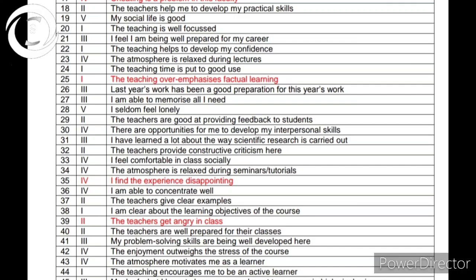DREEM is a general, multi-dimensional, and multi-cultural instrument. It gives a universal score of a maximum of 200 and measures five separate elements of educational environment: students' perception of learning, students' perception of teachers, students' perception of atmosphere, students' academic self-perception, and students' social self-perception.